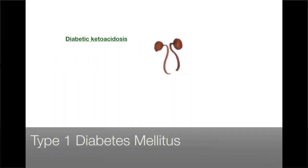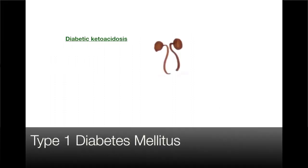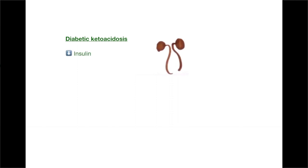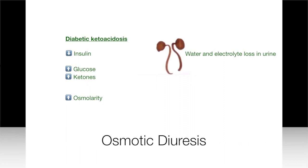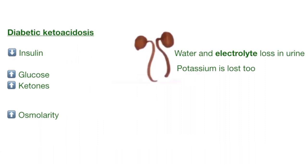Diabetic ketoacidosis is seen in patients with type 1 diabetes. These patients do not produce insulin. So the amount of glucose in the blood is high along with ketones. These substances increase the osmolarity. This attracts a lot of water and leads to loss of water along with electrolytes in the urine. This is called osmotic diuresis. Potassium is also lost in this form.